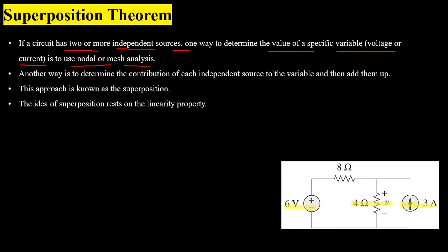You can use mesh analysis, nodal analysis, or any other method which is more convenient to you. Another way, using the linearity property, is to find the contribution of each independent source to the unknown variable — which can be either voltage or current through an element — and then add them up for the overall result.